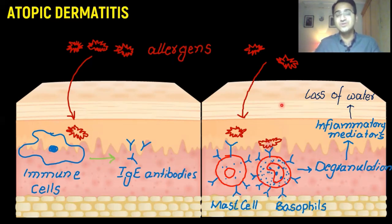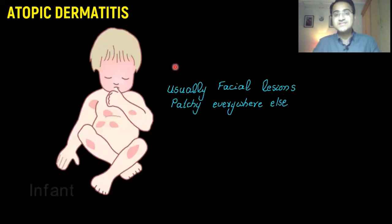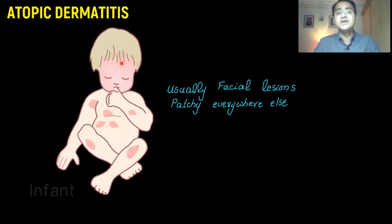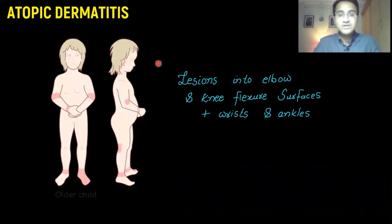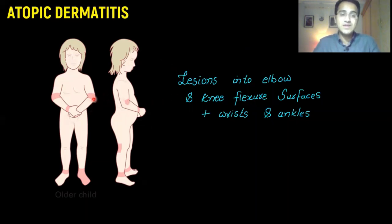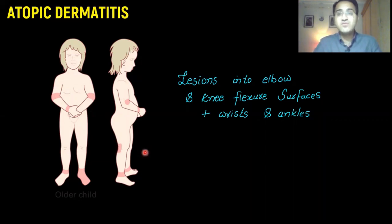In infants, atopic dermatitis usually affects the face and scalp, with facial lesions and patchy involvement elsewhere. In older children, it mainly affects the flexor surfaces of the elbows and knees.